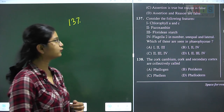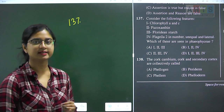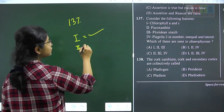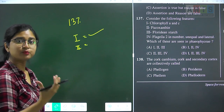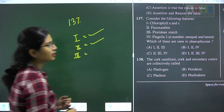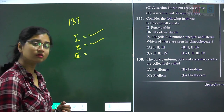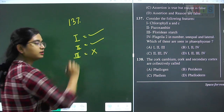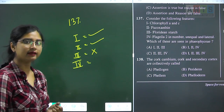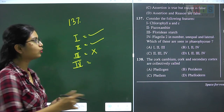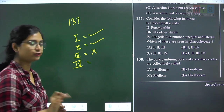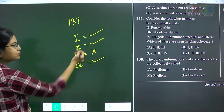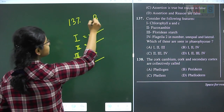Question 137: which features are seen in Phaeophyceae (brown algae)? Statement 1: chlorophyll A and C are present — correct. Statement 2: fucoxanthin, the characteristic pigment giving brown color — correct. Statement 3: Floridian starch as stored food — incorrect; Phaeophyceae stores mannitol and laminarin, not Floridian starch. Statement 4: flagella 2 in number, unequal and lateral — correct. Correct statements are 1, 2, and 4. Question 137 answer is option B.